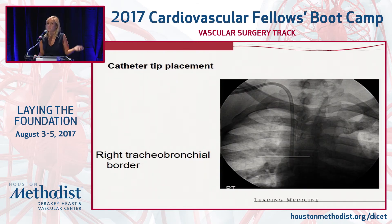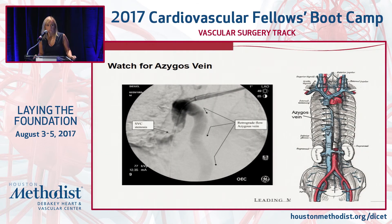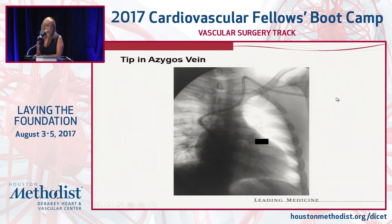The catheter tip should be placed at the SVC-right atrial junction. An approximate landmark for this is the right tracheobronchial border — that's a rough estimate. Putting it a little further into the right atrium is acceptable. Watch for the azygous vein: this picture shows how somebody could be fooled by placing a wire down there and thinking they're in the SVC. A catheter tip in the azygous vein is not good enough — it's a collateral and won't provide high enough flow for ideal dialysis access.